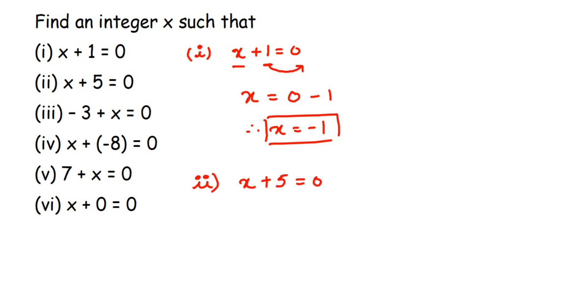The second question is x plus 5 is equal to 0. It's the same as the first question. I want the x value, so I transpose 5 to the other side. Five is positive, so when transposed it becomes negative: 0 minus 5 is minus 5. Therefore, x is equal to minus 5.